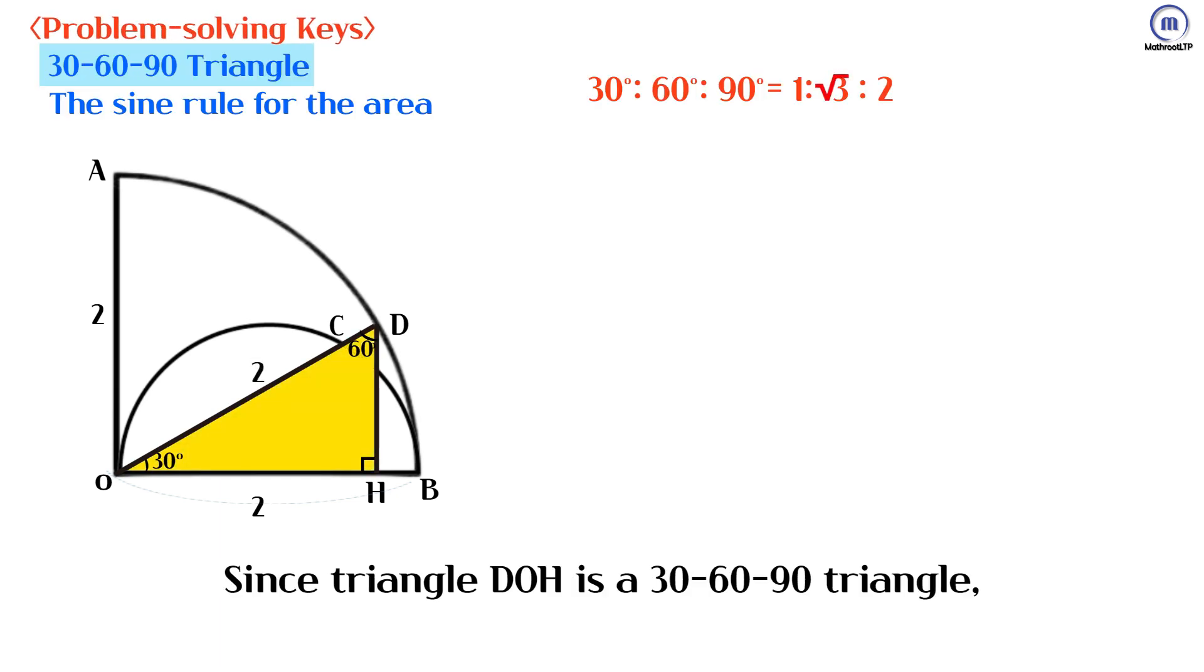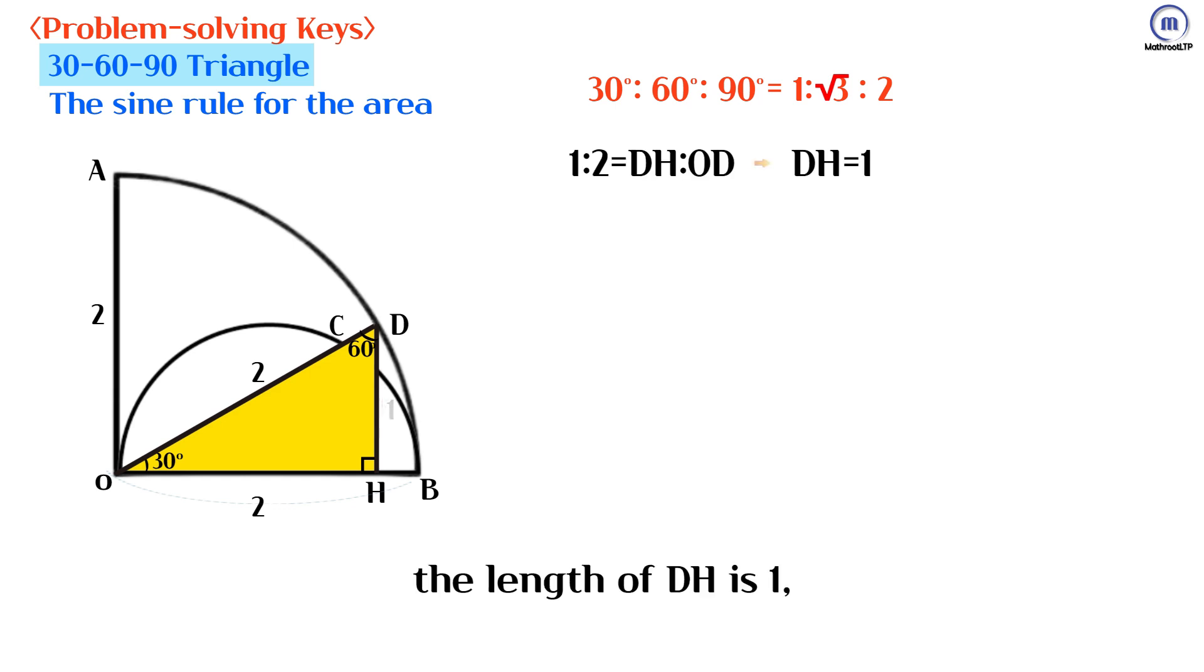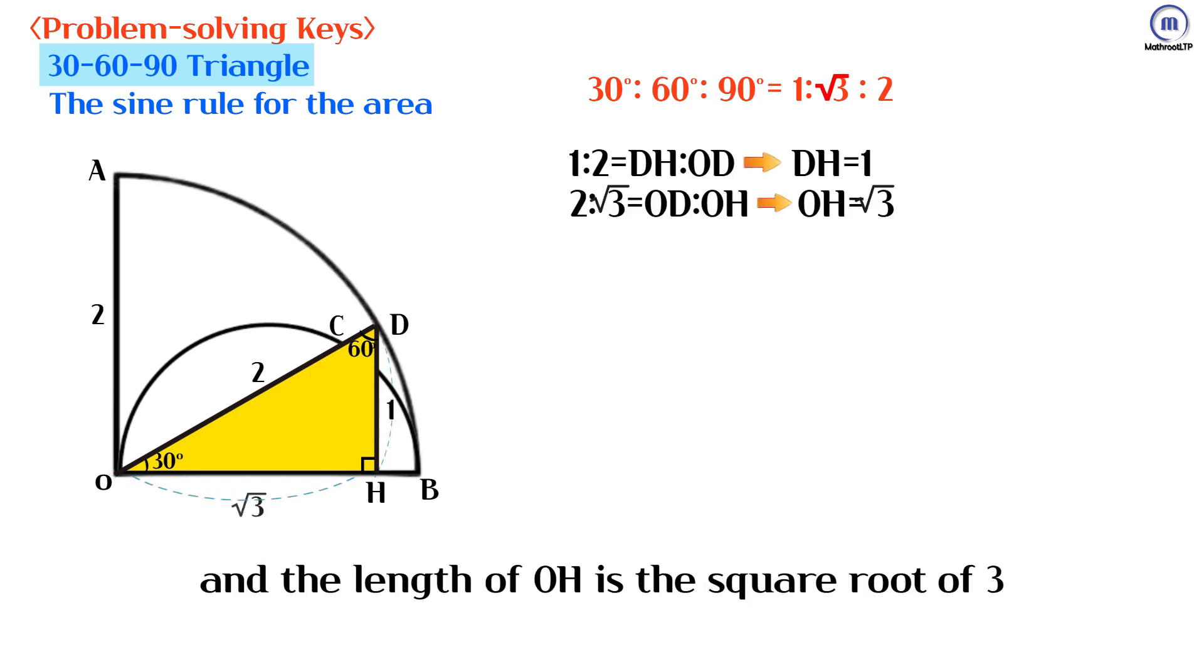Since triangle DOH is a 30-60-90 triangle, the length of DH is 1, and the length of OH is the square root of 3.